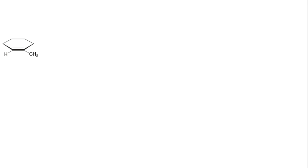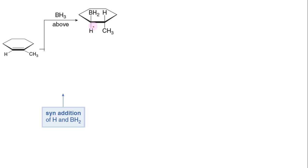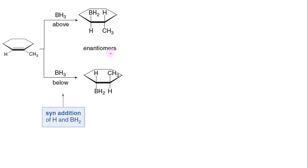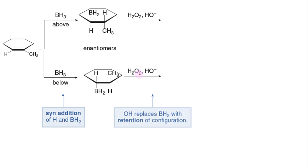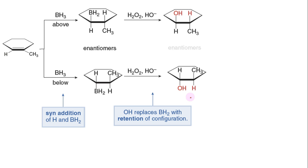Let us work out another hydroboration-oxidation reaction. Consider the hydroboration of 1-methylcyclohexene. The first step of hydroboration is syn addition of H and BH2, which can occur either from the top side of the carbon-carbon double bond so that H and methyl are pushed down, or the syn addition may occur from the bottom side so that H and methyl are pushed above, resulting in the formation of enantiomeric alkylboranes. The second step is oxidation, in which OH replaces the BH2 group with retention of configuration, so that two enantiomeric cyclic alcohol molecules are formed.